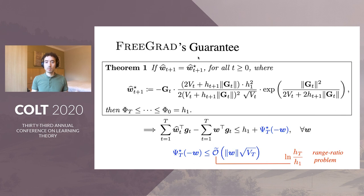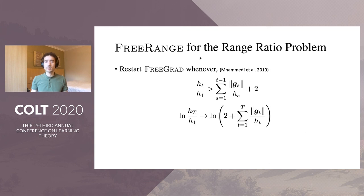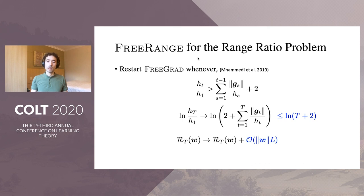However, the O-tilde expression hides a log ratio between the last hint and the initial hint, and depending on the range of the gradients, this log ratio could be arbitrarily large. To avoid this issue, we apply a recently introduced restart trick, adapted to the setting with hints and an unbounded domain. We restart the algorithm whenever the ratio between the last hint and the initial hint exceeds a threshold that depends on the norm of the previous gradients. This replaces the log ratio between hints with a log term that is at most log(t+2), so it does not explode regardless of the gradient range. The price in terms of regret is an additive lower order term that scales with the norm of the comparator and the Lipschitz constant.